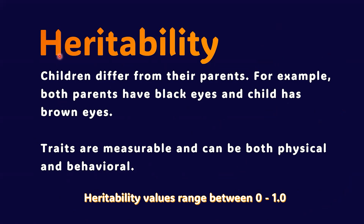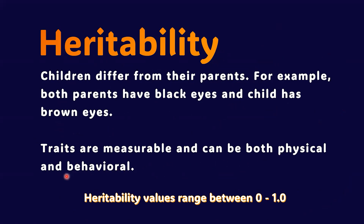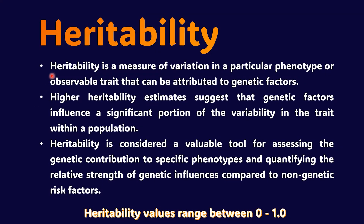We know that children differ from their parents. For example, both parents have black eyes and the child has brown eyes — here comes heredity to define the differences. Importantly, traits are measurable and can be both physical and behavioral. Heredity is a measure of variation in a particular phenotype, or observable trait, that can be attributed to genetic factors.